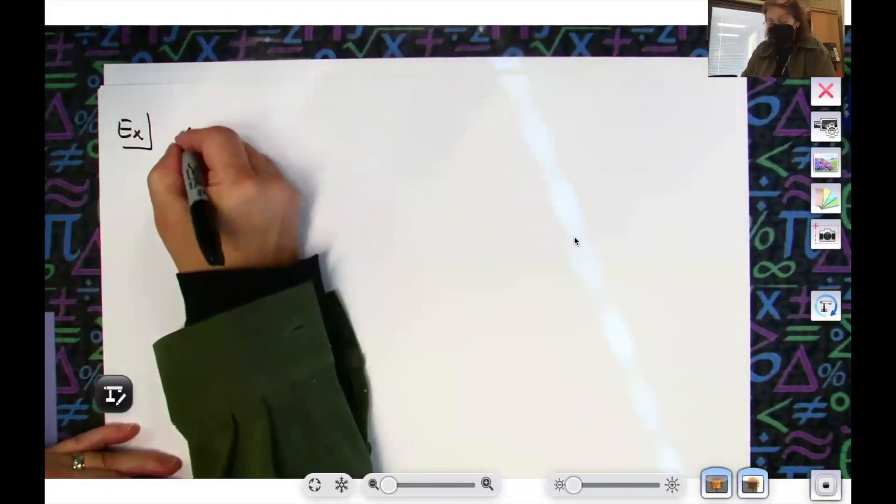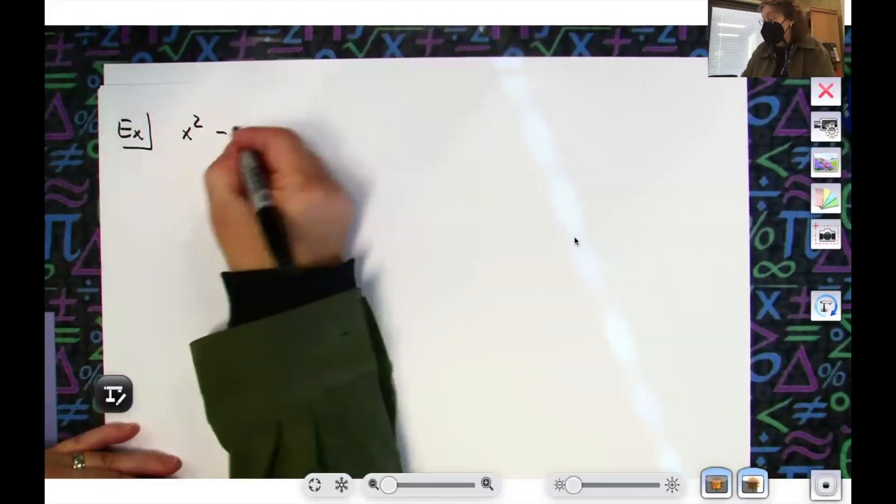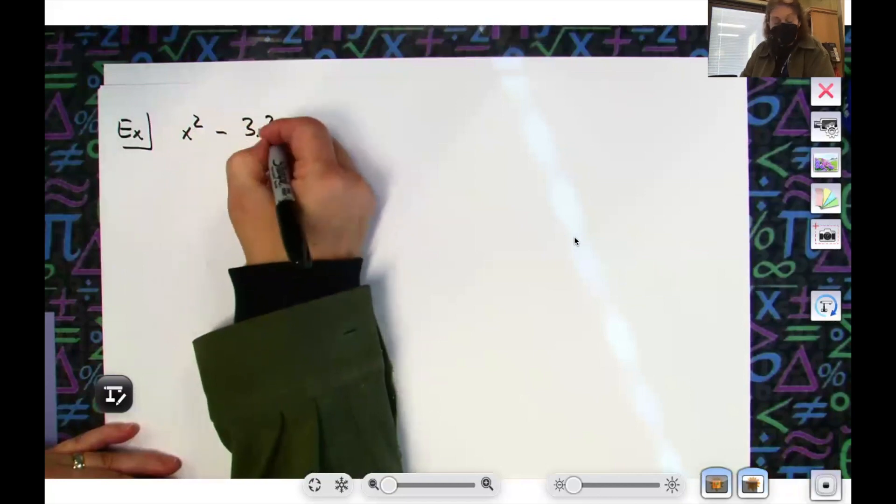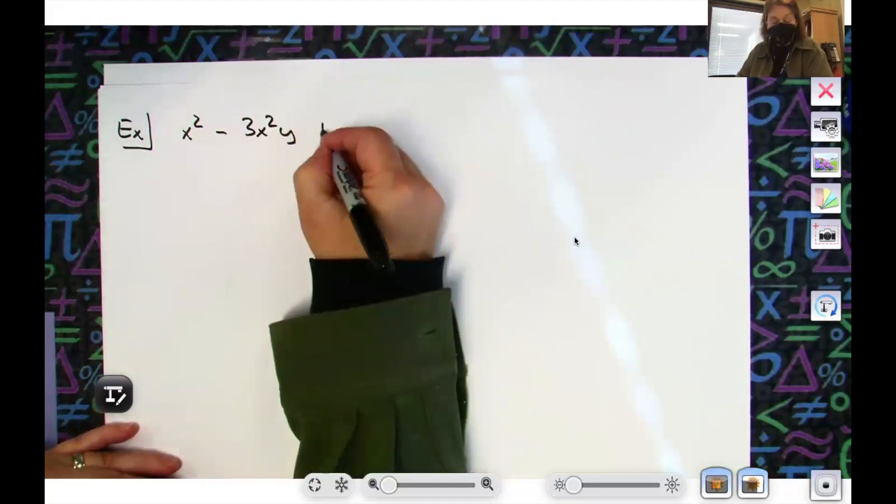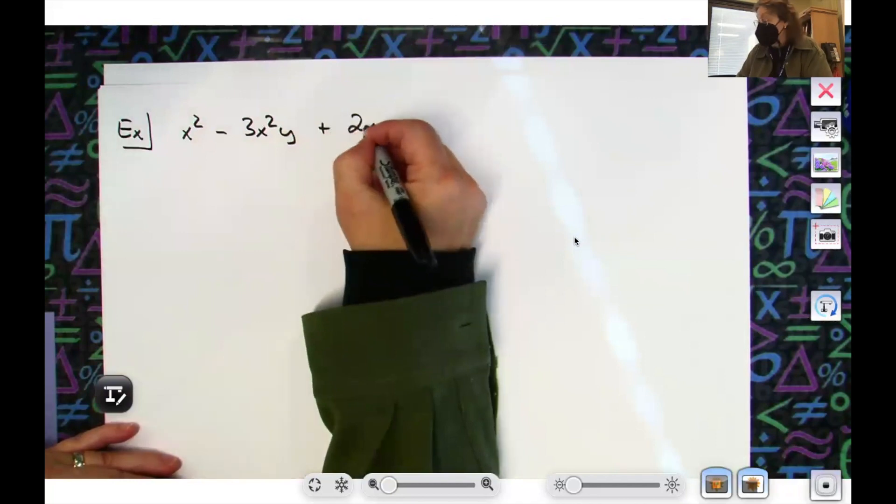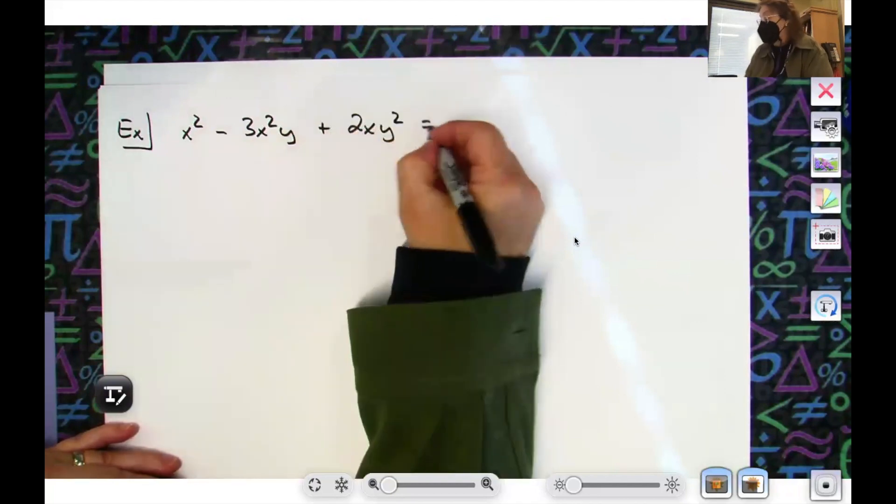All right, so let's do x² - 3x²y + 2xy² = 12.